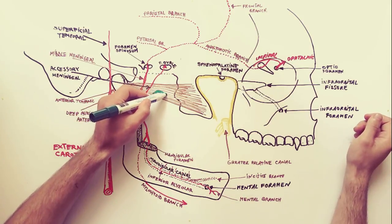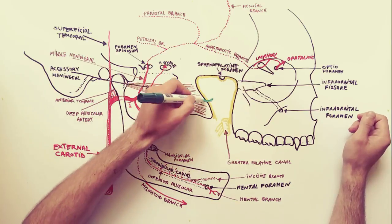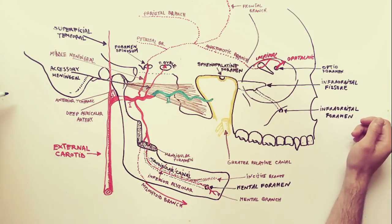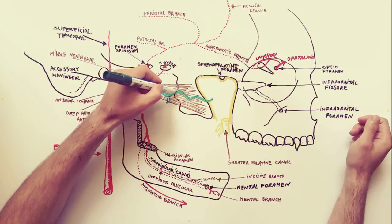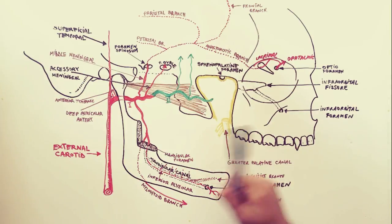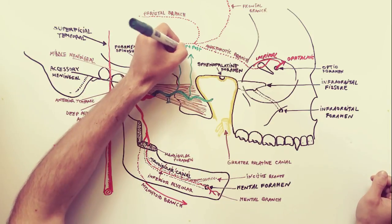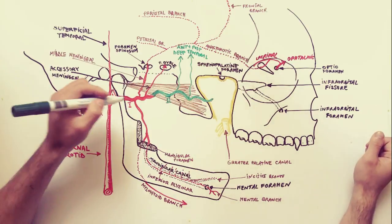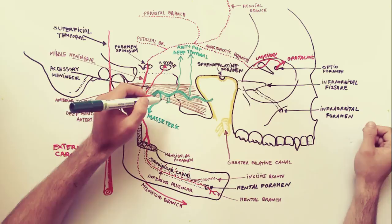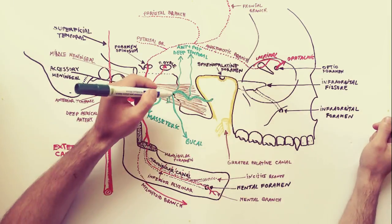The second part of the maxillary artery, indicated in green, stretches from the lower border of the lateral pterygoid muscle to the pterygomaxillary fissure and is related to the lateral pterygoid muscle, placed on its lateral surface. The anterior and posterior deep temporal arteries ascend between the temporalis and the pericranium to supply the temporal muscle. The masseteric artery is small and passes laterally through the mandibular notch to the deep surface of the masseter muscle, which it supplies. The buccal artery is also small and supplies the cheek and the buccinator muscle.